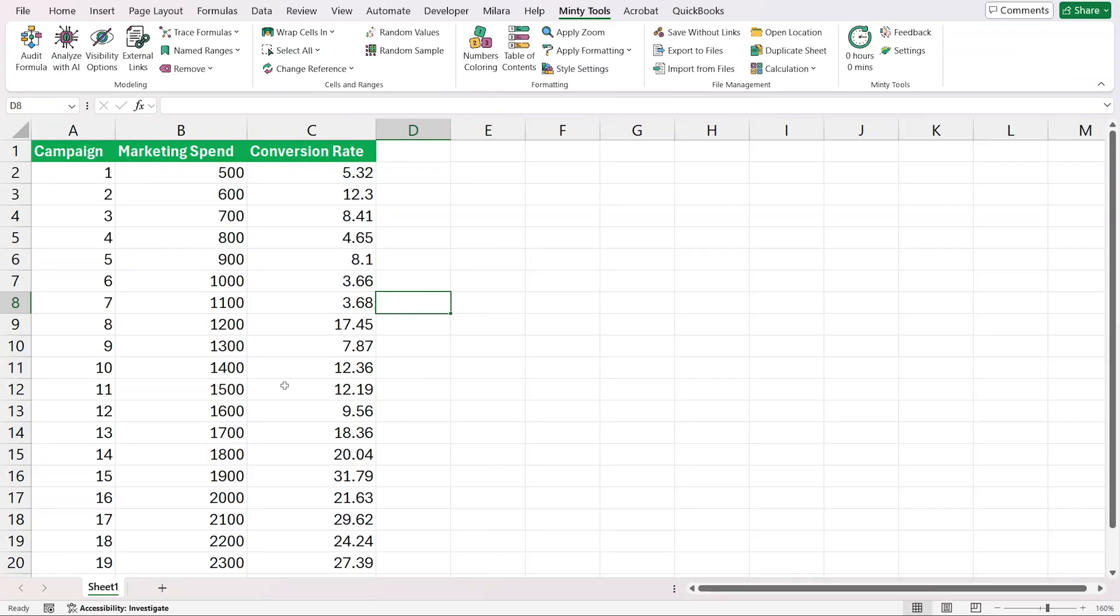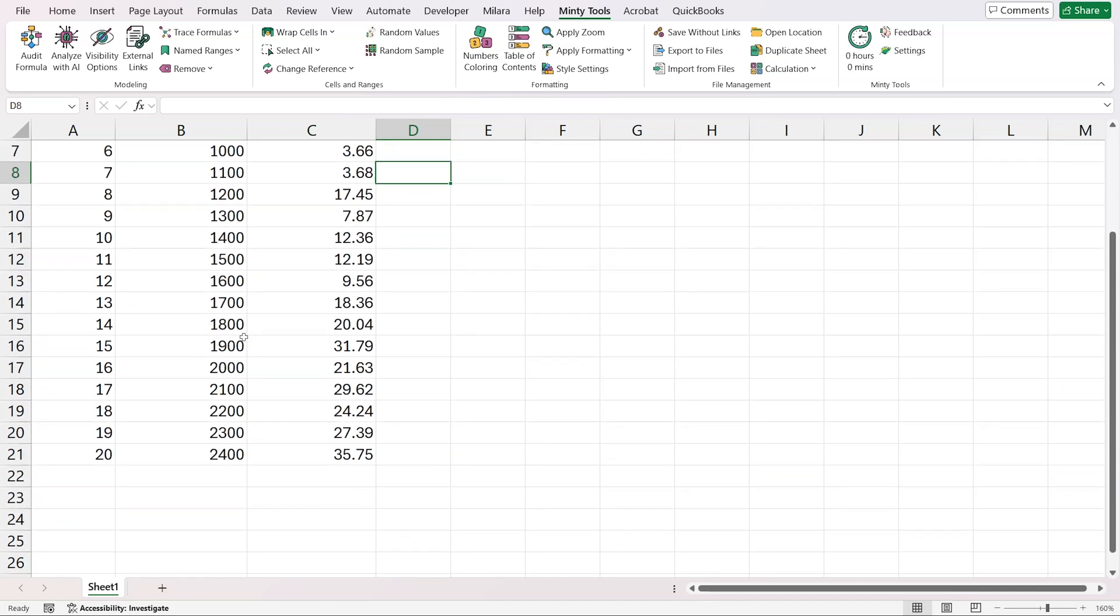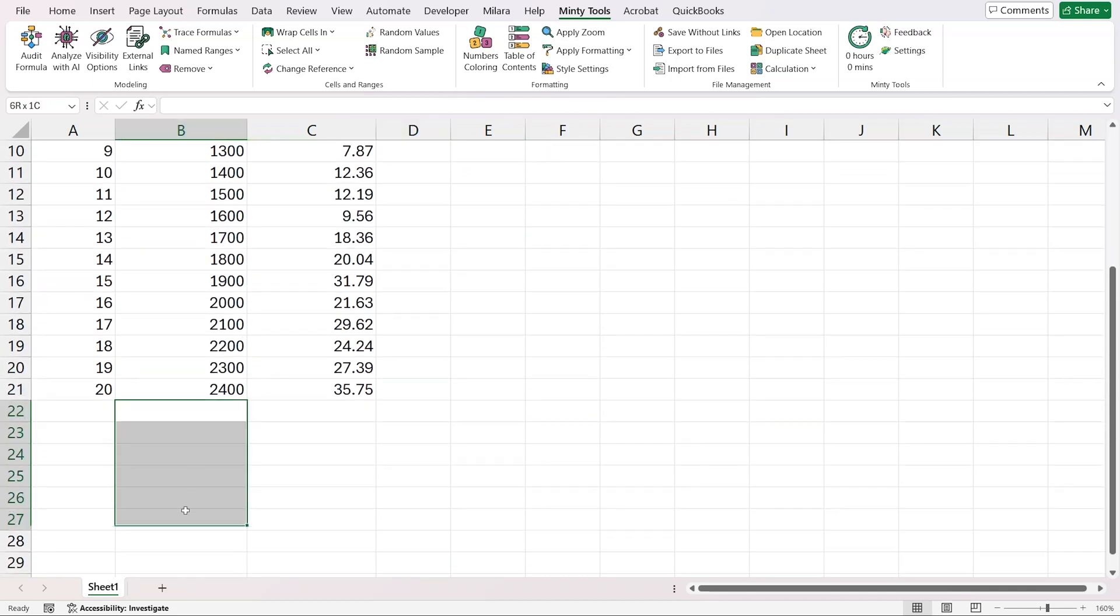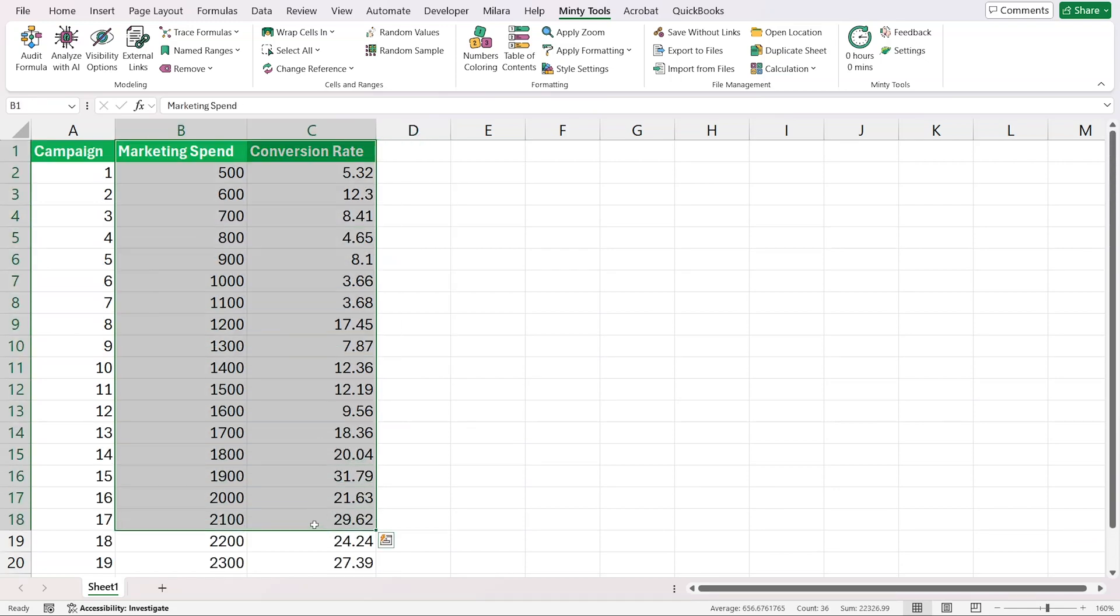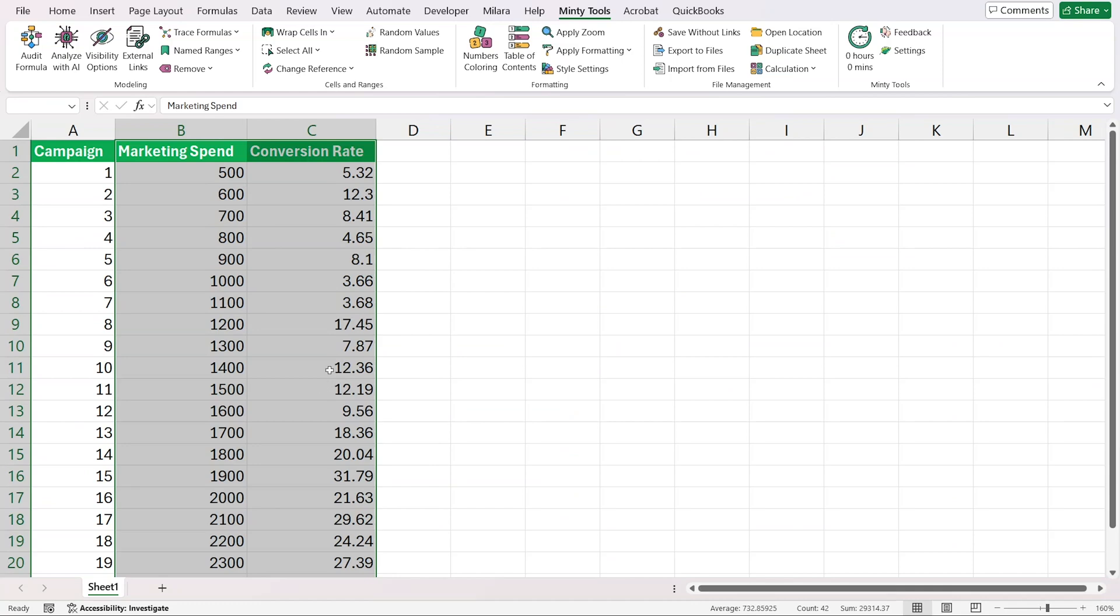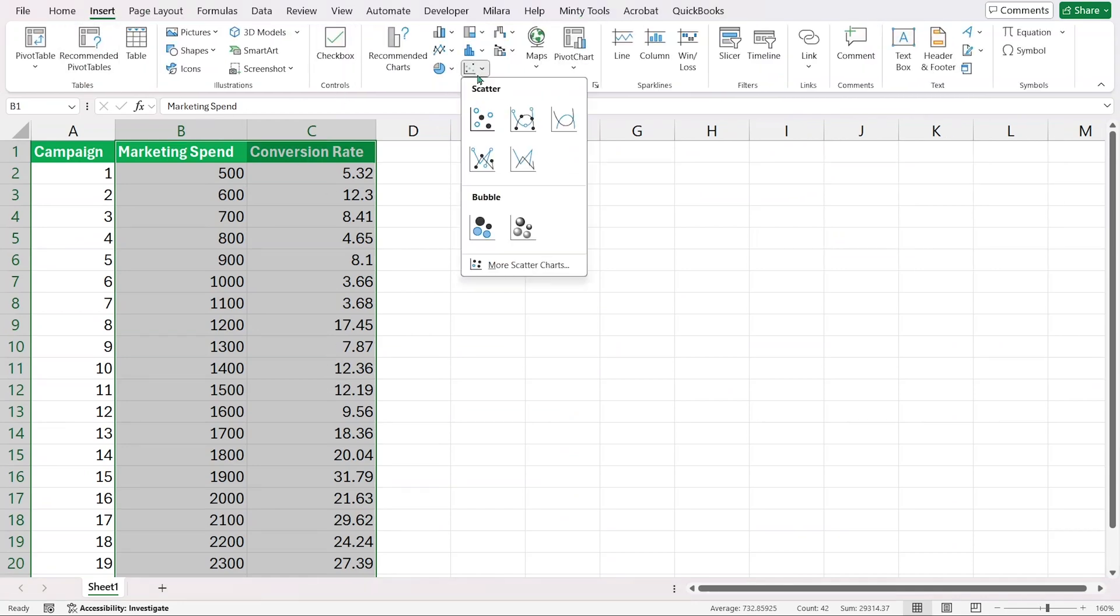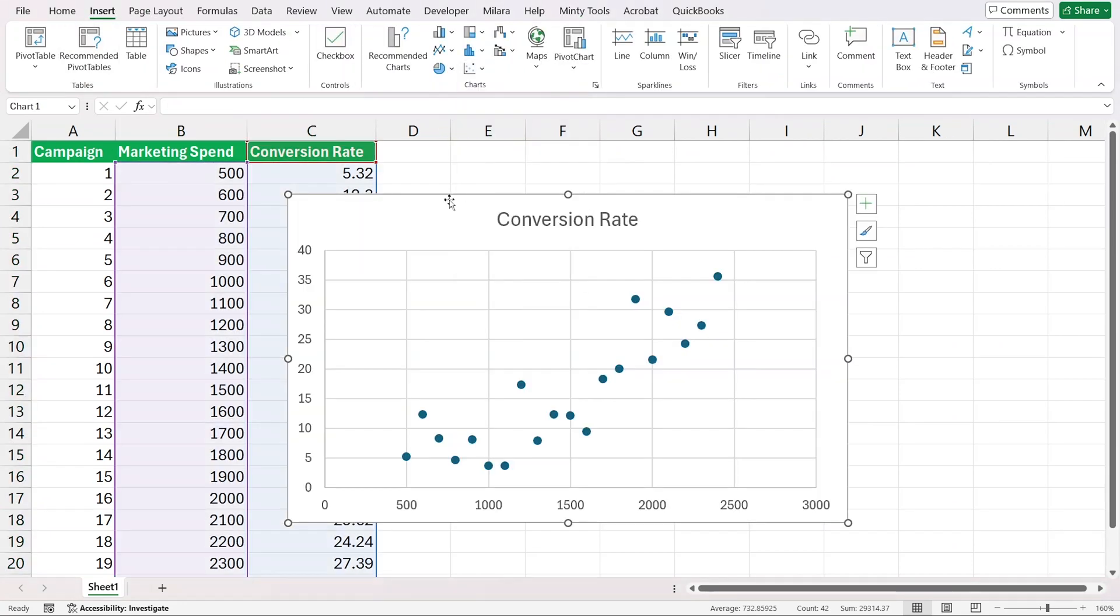Now, let's take a look at an example in Excel. Here we have campaigns that we run. This is our marketing spend, and this is the conversion rate that we achieved. Our goal is to predict if we spent more, what would the conversion rate be. The first thing we can do is grab those two and add a chart, and we're going to use a scatter plot chart.